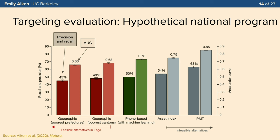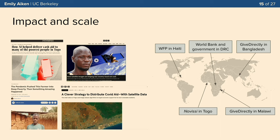A second evaluation using a nationally representative survey to simulate a national program shows a slightly different picture. The phone-based targeting is again better than geographic targeting, but not as good as an asset index or proxy means test when high-quality in-person survey data is available. This is probably a slightly higher-quality evaluation since the nationally representative data was collected in person rather than by phone.